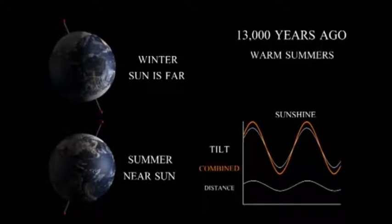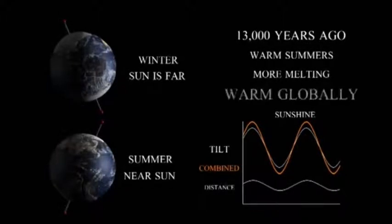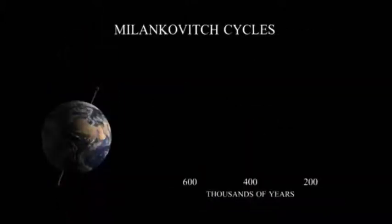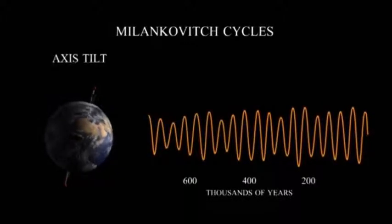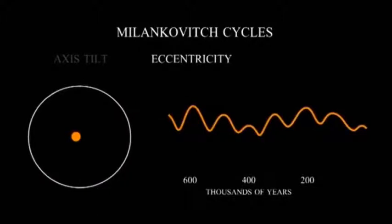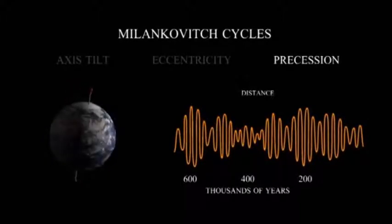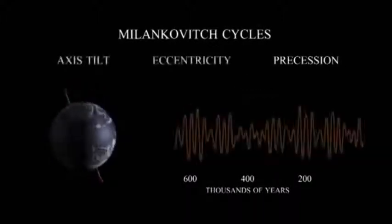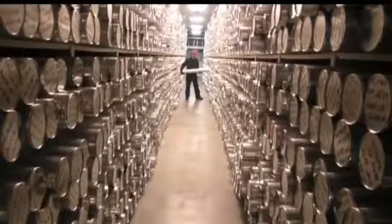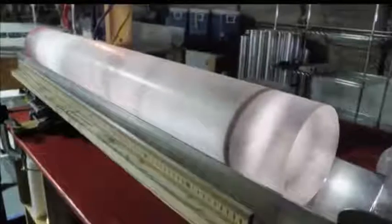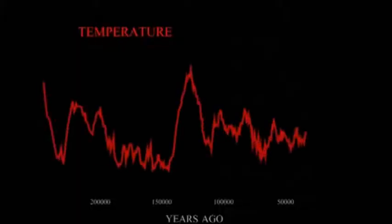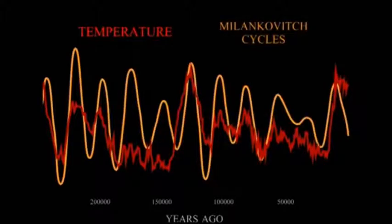Warmer summers mean more melting, more melting means less reflection, which means the climate as a whole is warmer. The amount of summer sunlight is affected by three long-term cycles: one changes the tilt, one makes our orbit more circular or more oval, and one changes how the distance to the Sun matches with the changing of the seasons. These three cycles powerfully impact our climate. Scientists have measured the history of our climate using ice cores. Earth's climate is complicated — you can't just reduce it to a single input. But the Milankovitch cycles have played a key role in our climate for hundreds of thousands of years.